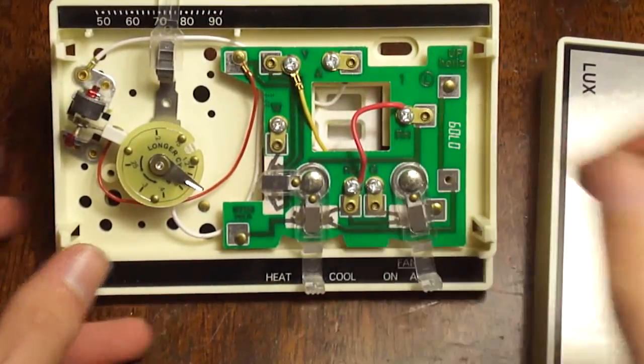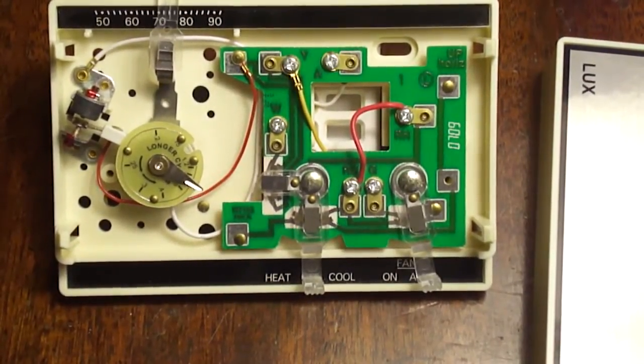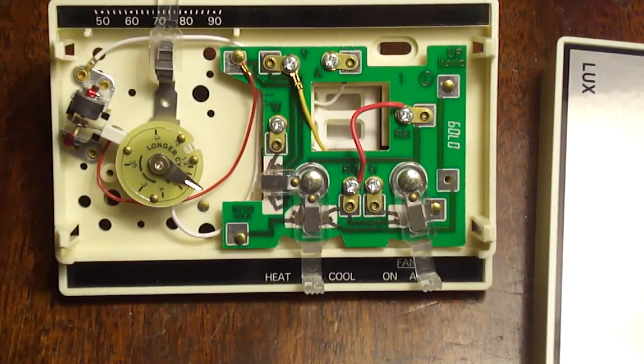You can see the jumper between RH and R, what I think it's RC on this one.